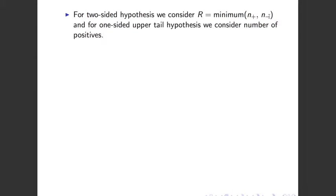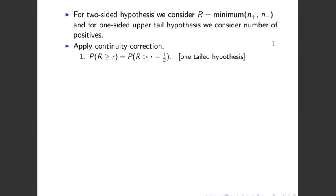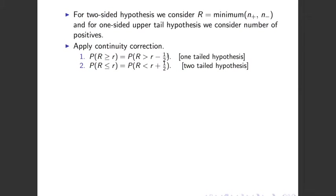For a two-sided hypothesis, r is the minimum of n-plus and n-negative. For a one-sided upper-tail test, r equals n-plus. We then apply a continuity correction. For a one-tailed hypothesis test: the probability that R is greater than or equal to r equals the probability that R is greater than r minus one half. For a two-tailed test: it's a less-than-or-equal sign, and we add one half. So we add one half for two-tail and subtract one half for one-tail.